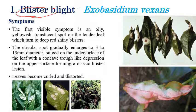The first visible symptom of blister blight is initially small yellow color or oily spots on the tender leaves, seen on the lower surface initially. Later stages, we can also observe them on the upper surface. These oily, yellow color, transparent spots appear on the surface and over time slowly convert into blister-like lesions.